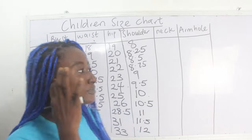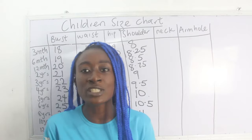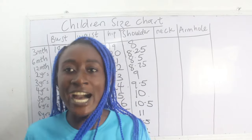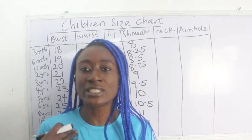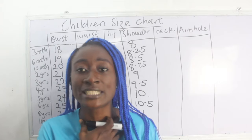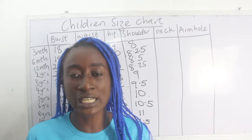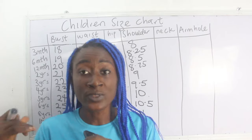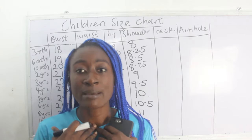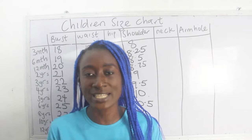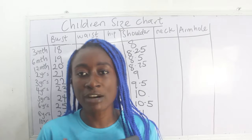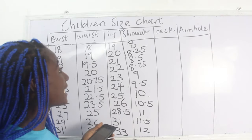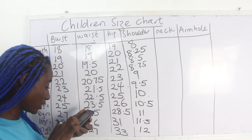The next measurement is the neckline. Comment below if you'd also like a tutorial on men's size charts. For children, the neckline is always very small — unlike adults who can have a wide neckline. Children's necklines are kept small so they are not exposed to the cold. You should put that into consideration when determining children's neckline measurements.